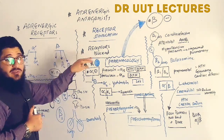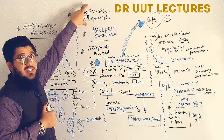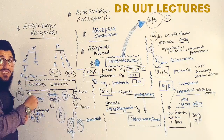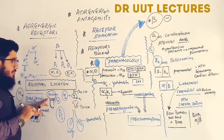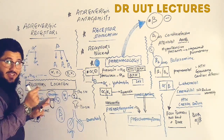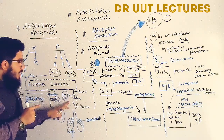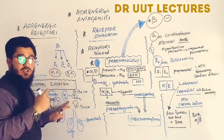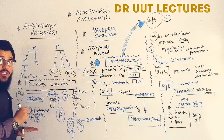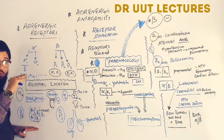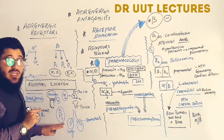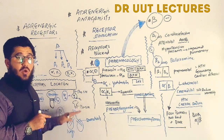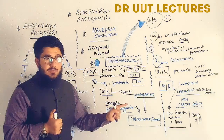If we block these receptors using adrenergic antagonist drugs, the effects become opposed. Blocking alpha-1b causes vasodilation and decreased blood pressure. Blocking alpha-1a reduces urinary retention, facilitating urination. Blocking alpha-2 increases norepinephrine release. Blocking beta-1 decreases heart function. Blocking beta-2 causes bronchoconstriction instead of bronchodilation.